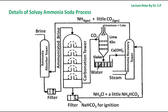Carbon dioxide is recirculated to the carbonation tower as shown in the figure. When calcium carbonate is heated, calcium oxide is obtained along with carbon dioxide gas. The calcium oxide is treated with water to form calcium hydroxide, which is then heated with ammonium chloride to form ammonia and calcium chloride as a byproduct. This obtained ammonia is used again in the process.